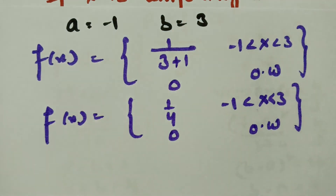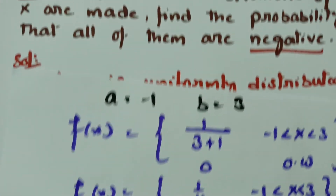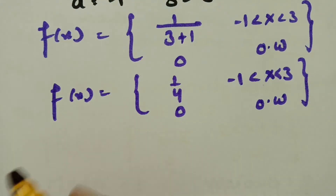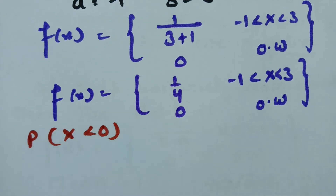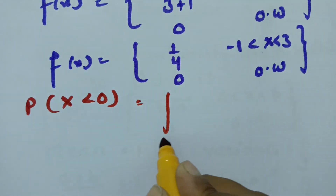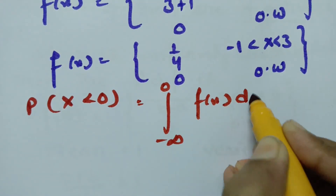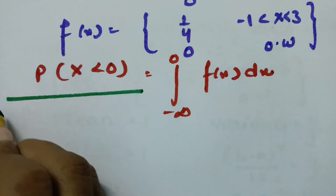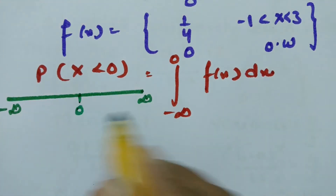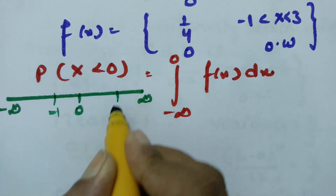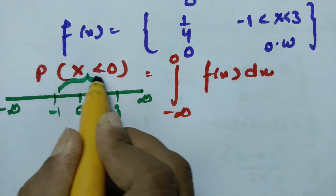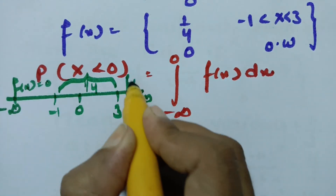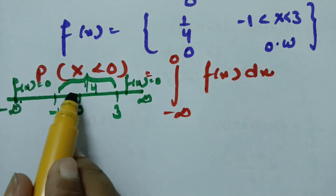After getting the probability density function, the next step is to find the probability that all observations are negative, which means calculating P(X < 0). This is the integral from minus infinity to 0 of f(x) dx. In the uniform distribution, f(x) = 1/4 between -1 and 3, and f(x) = 0 elsewhere.